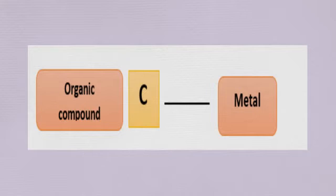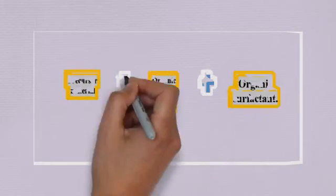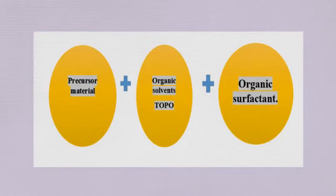Organometallic chemistry is the study of chemical compounds containing at least one bond between a carbon atom of an organic compound and the metal. Actually the whole process contains three main parameters: precursor material, organic solvents with high boiling point and long alkyl chain, and the organic surfactant. Let's talk about the role of each one of these components.